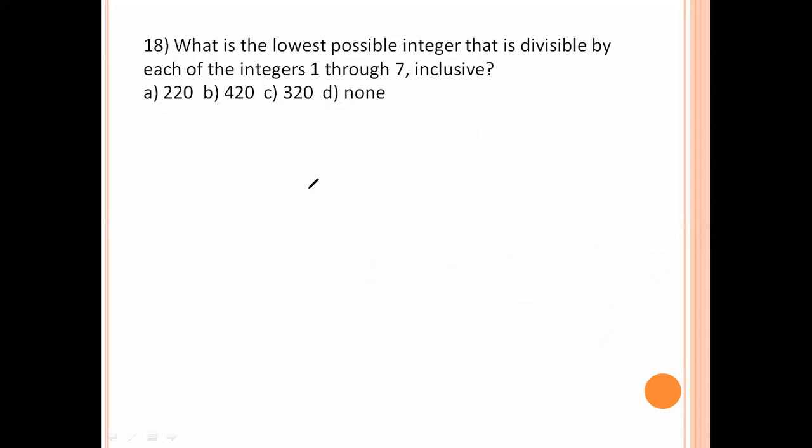What is the lowest possible integer that is divisible by each of the integers 1 through 7 inclusive? So, find the LCM of 1, 2, 3, 4, 5, 6 and 7. Otherwise, all these numbers are divisible, any one of these options. 1 divides here, 2 divides, 3 is not divisible. 3 into 7 is 21, not divisible here. So, this is not correct answer. Yes, it divides, 1 divides here, 2 divides, 3, 4, 5, 6, 7. So, all these numbers divide this value. So, this is the LCM of this one. So, this is the lowest possible integer that is divisible by 1 through 7. Option number B is the right answer.